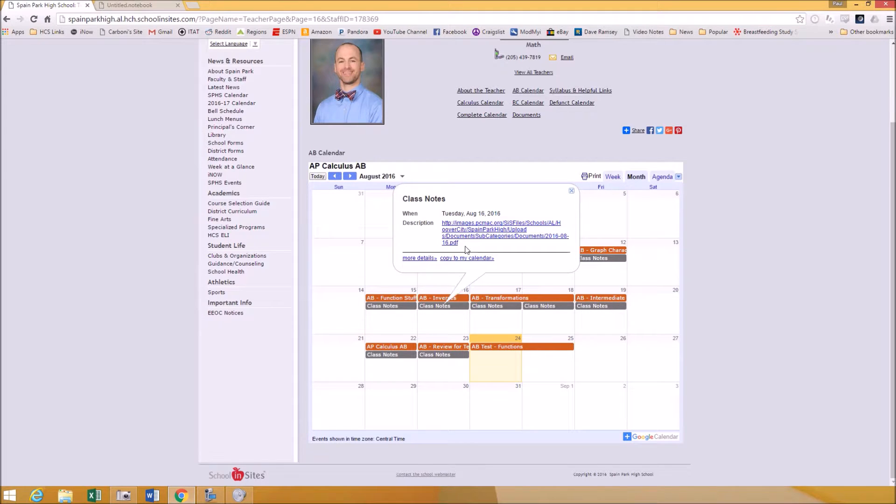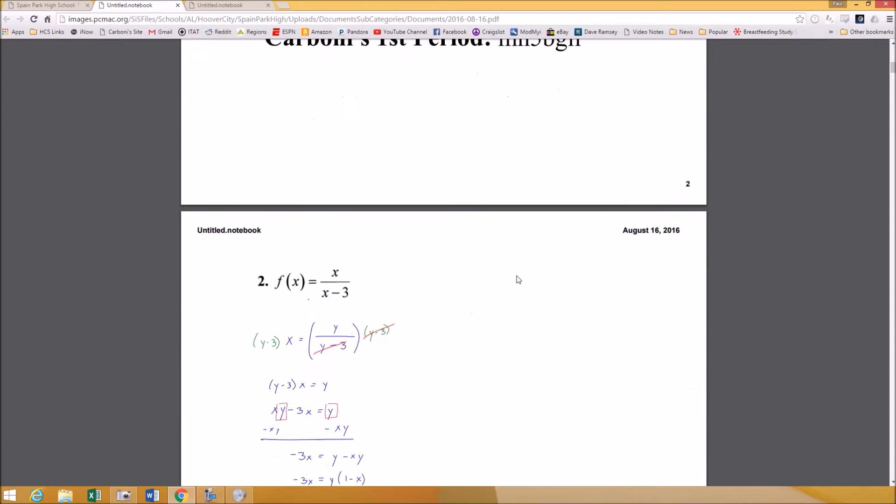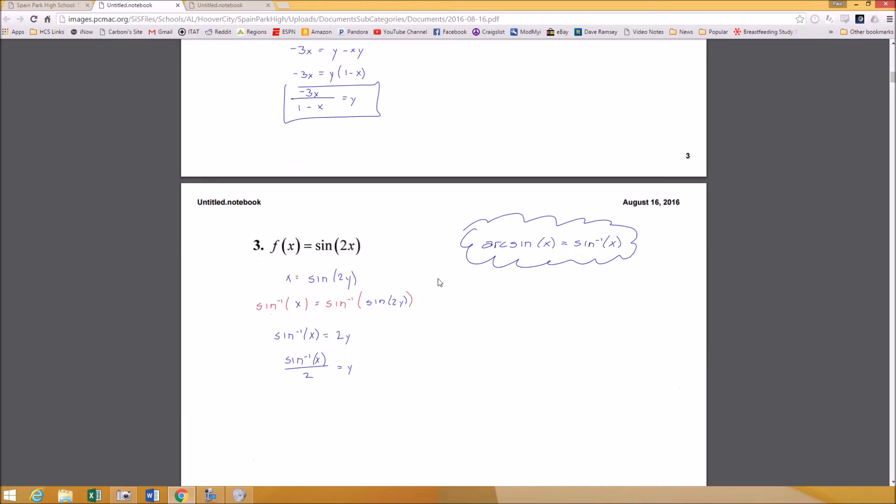I do not use a whiteboard. I use a digital version of it. It's called a smart board and that allows me to save everything that I write as a PDF and load it on my webpage. So here's the beginning of first period. That's what the one's for. And if you scroll down, you can actually see the actual problems we did in class.